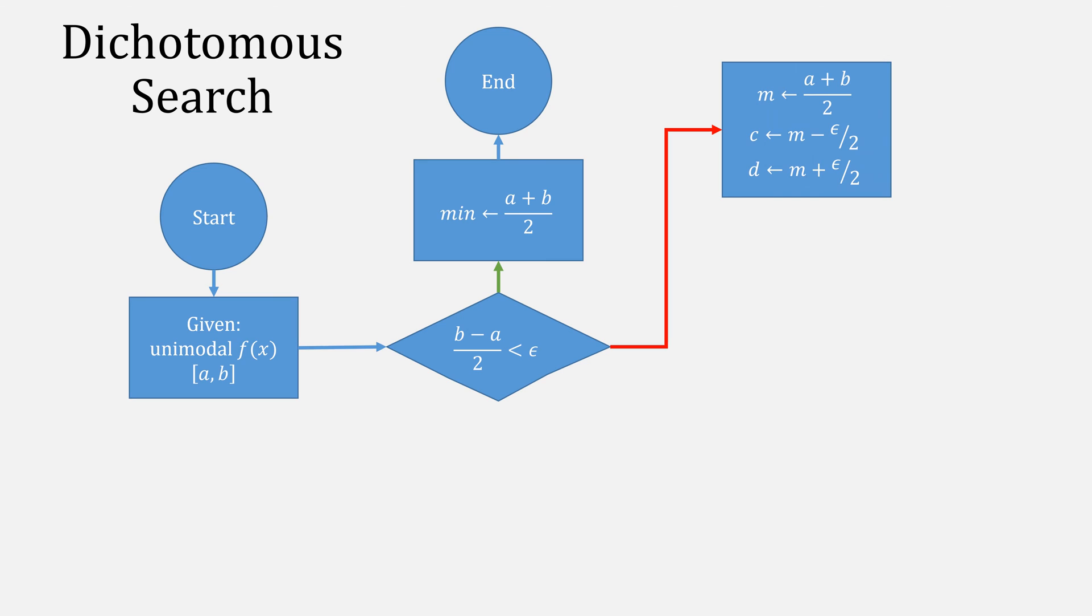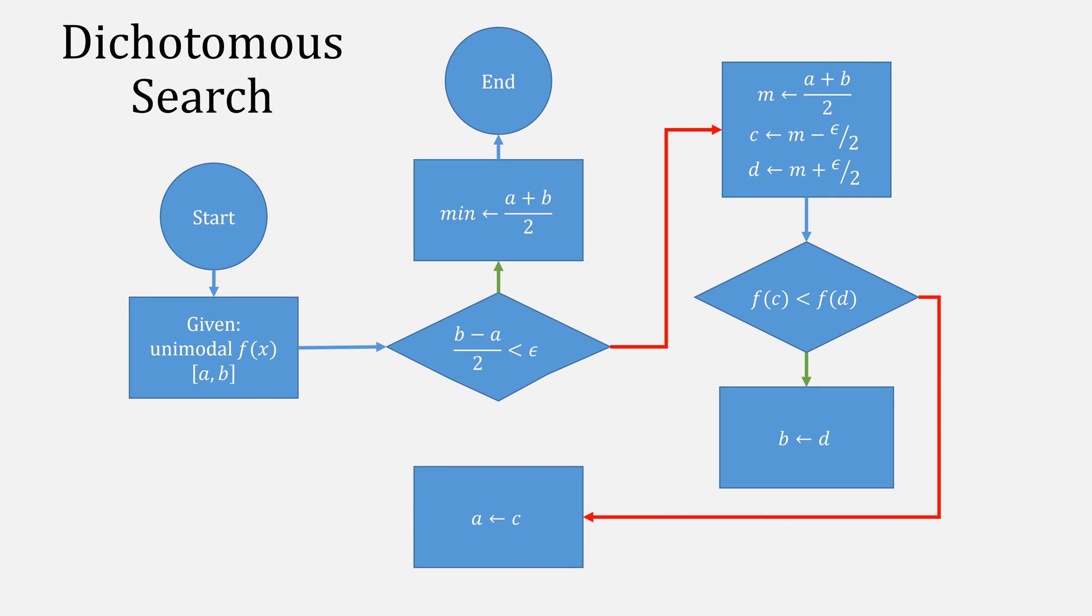Otherwise, we'll compute a new midpoint of A plus B over 2. Then, use C and D to left and right of M. Afterwards, check if F of C is less than F of D. When it is, we'll move D into B. And when it isn't, we'll move C into A. Then, repeat the process.